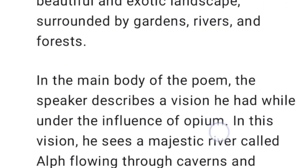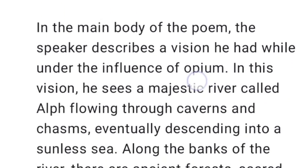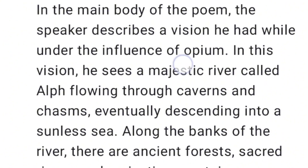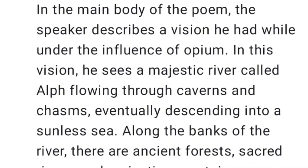In the main body of the poem, the speaker describes a vision he had while under the influence of opium. In this vision, he sees a majestic river called Alf flowing through caverns and chasms, eventually descending into a sunless sea.